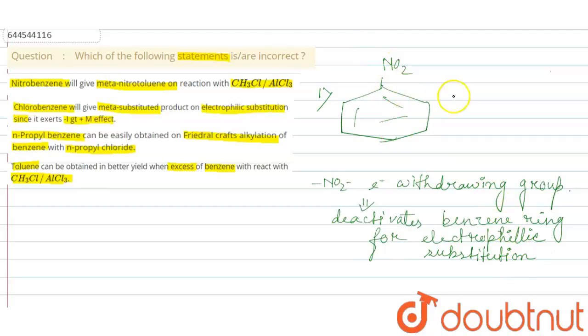That is why when CH3Cl, that is methyl chloride in presence of aluminum trichloride is added here, no reaction actually occurs.